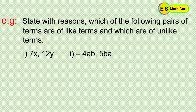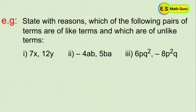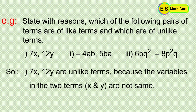Second one: minus 4ab and 5ba. Third one: 6pq squared and minus 8p squared cube. For the first pair, 7x and 12y are unlike terms because the variables in the two terms, x and y, are not the same.